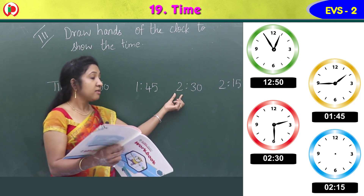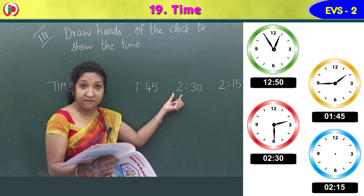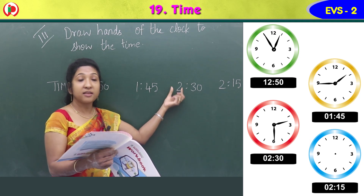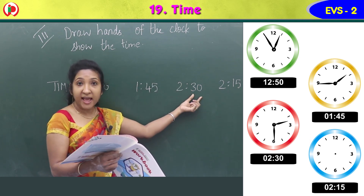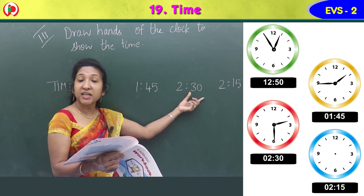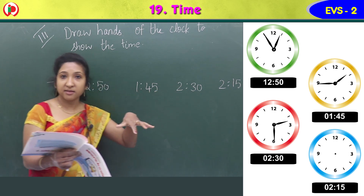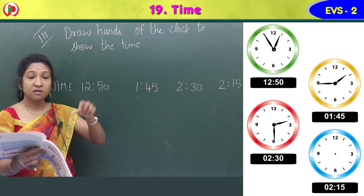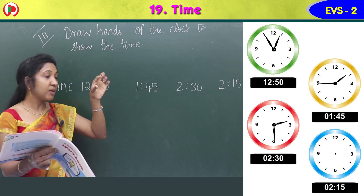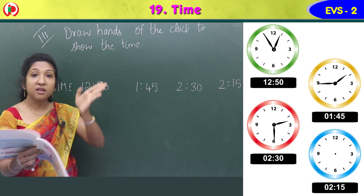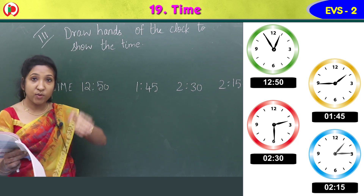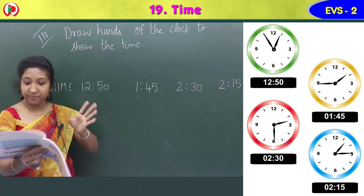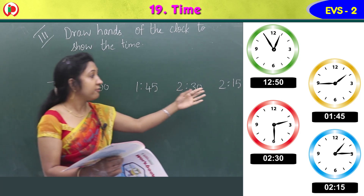Third time is 2:30. The hour hand, the smaller one, points at 2. Then 30 means the minute hand goes to 6. So the smaller hand is at 2 and the bigger minute hand is at 6.